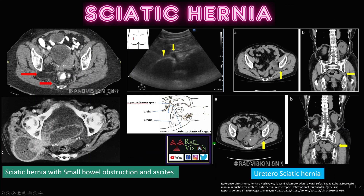Next, sciatic hernia — you can see herniation of fat through the sciatic foramen. Here also you can see sciatic hernia with small bowel obstruction and even ascites. Here there is another case where the ureter and bowel loop are seen in the gluteal region — the ureter is herniating through the sciatic foramen. After transvaginal reduction, the ureter has been completely repositioned. This was a case of uretero-sciatic hernia.